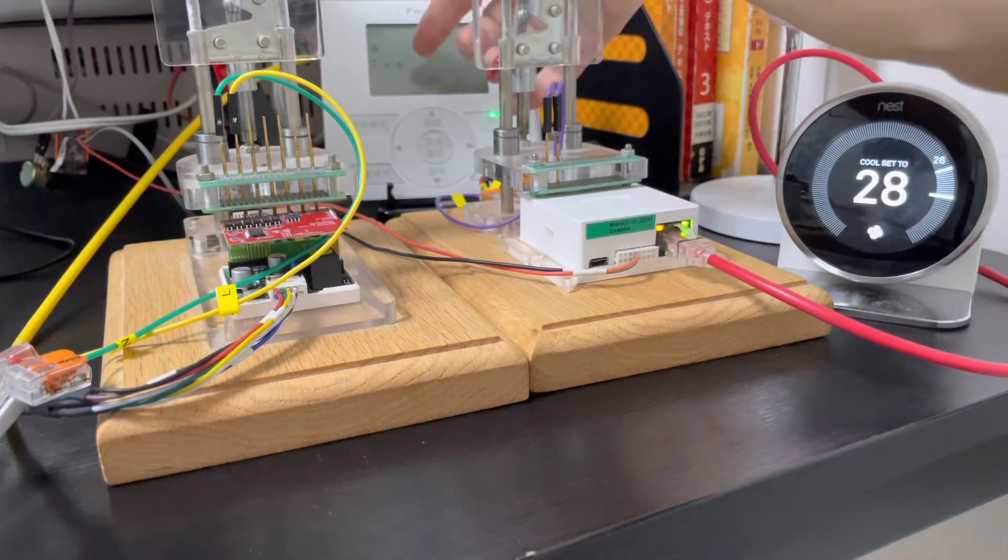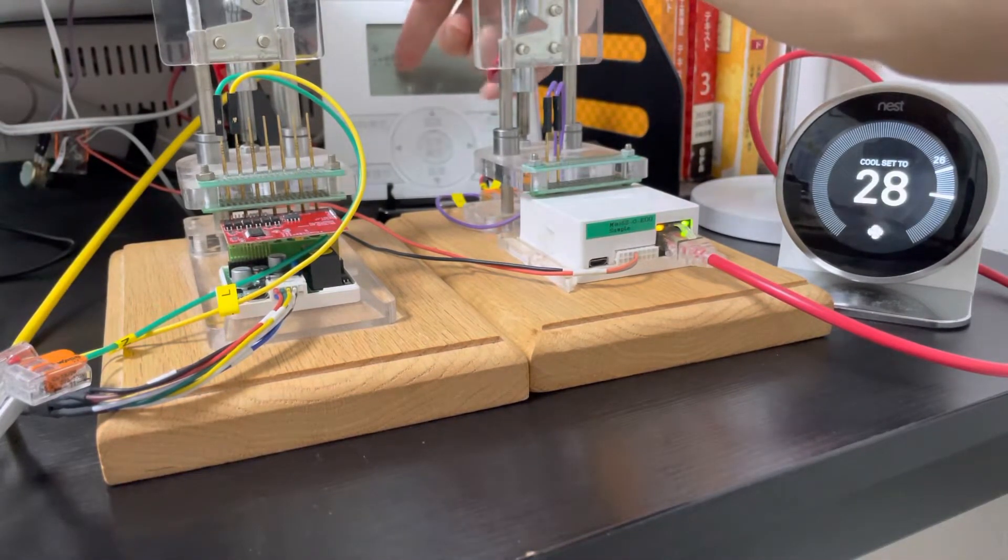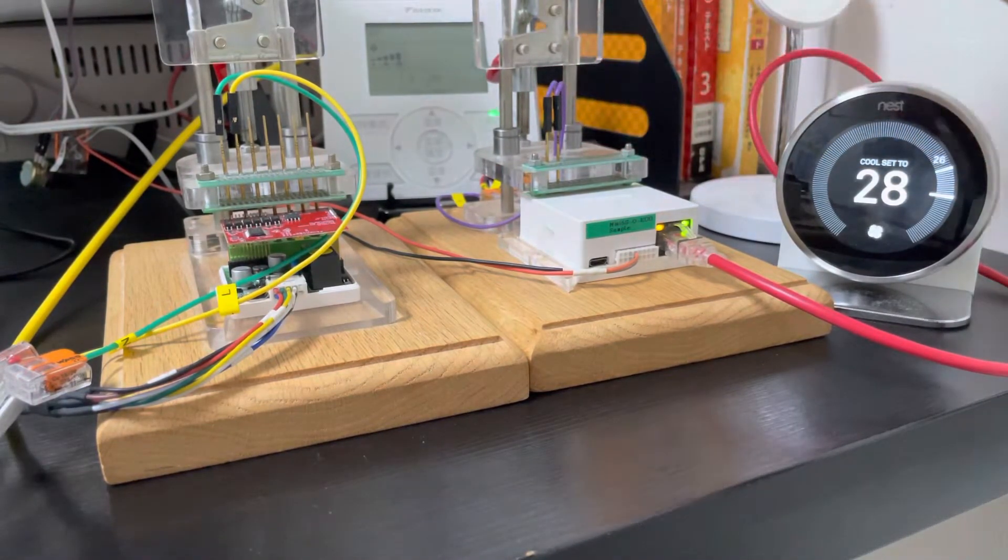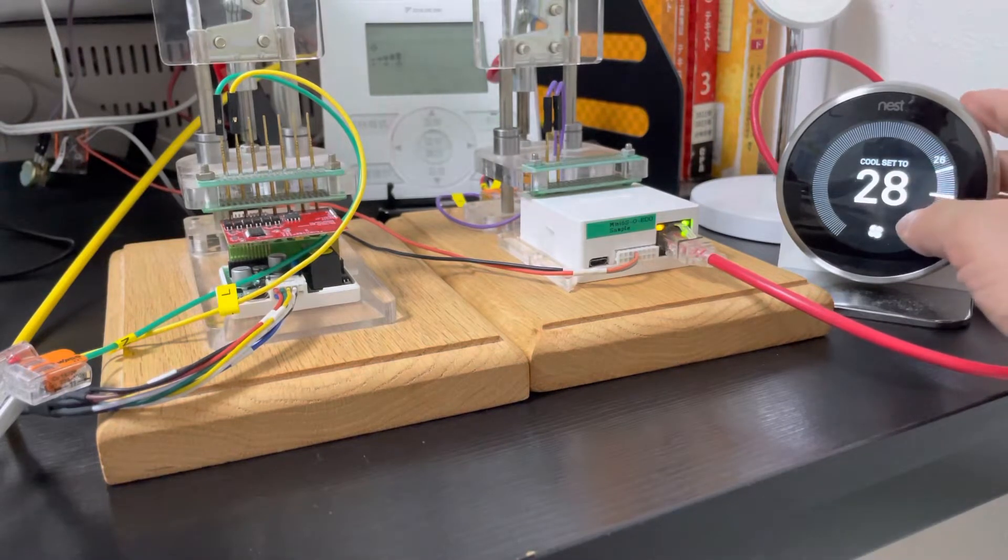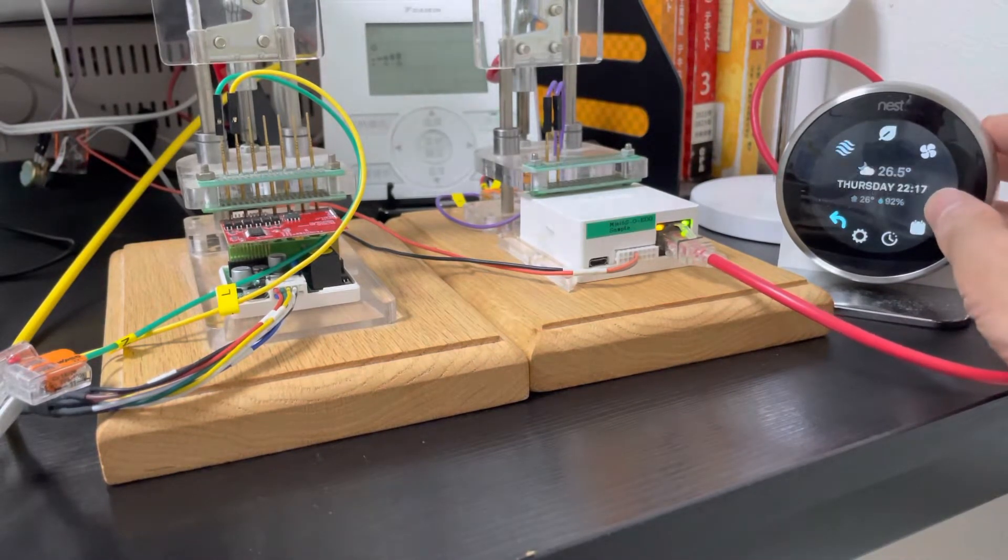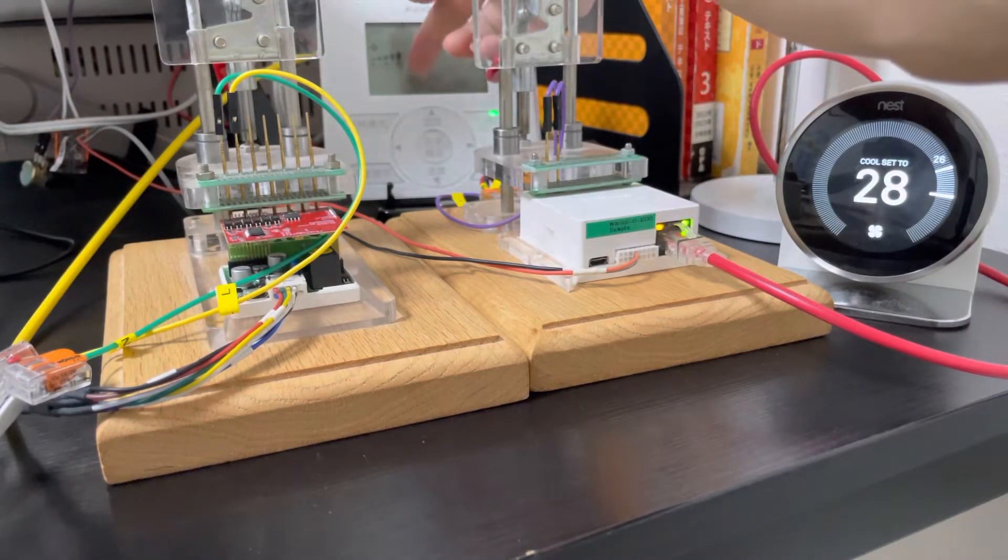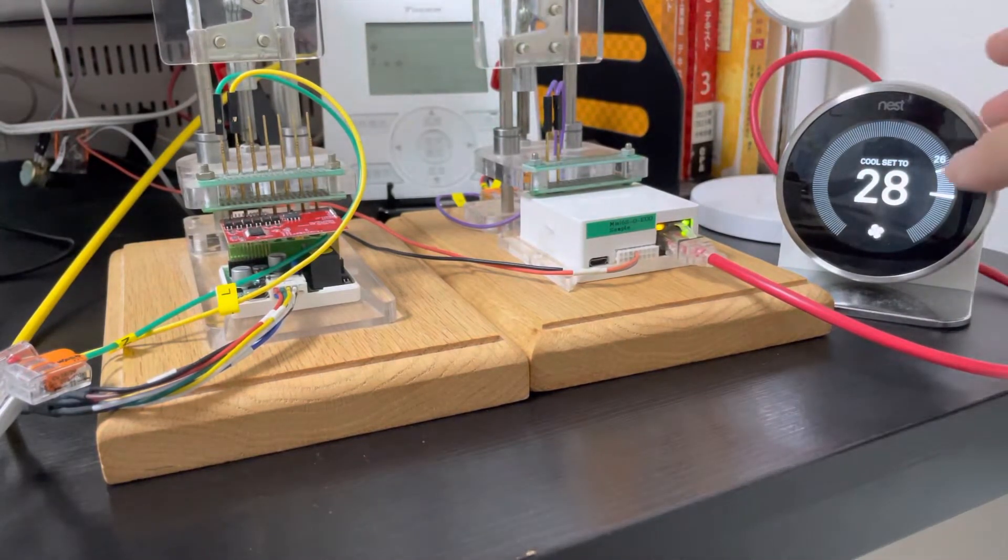So we can see the original thermostat fan speed change to five. If we turn off the original thermostat, it will turn on again in a few seconds. We stop it. We change back to low fan speed.